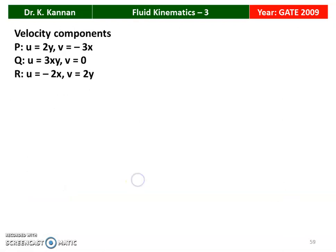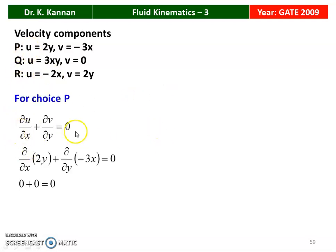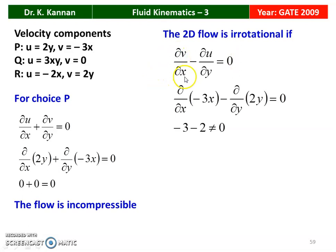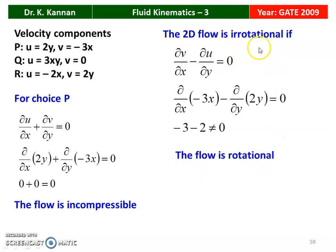For choice P, applying the continuity equation: ∂u/∂x + ∂v/∂y = 0 gives ∂(2y)/∂x + ∂(-3x)/∂y = 0 + 0 = 0, so the flow is incompressible. However, for irrotational flow, ∂v/∂x - ∂u/∂y = 0: substituting gives -3 - 2 ≠ 0, so it is rotational — the irrotational condition is not satisfied. For choice Q, the continuity equation gives ∂(3xy)/∂x + ∂(0)/∂y = 3y ≠ 0, so the flow is not incompressible — this choice fails.